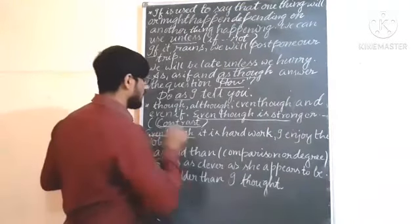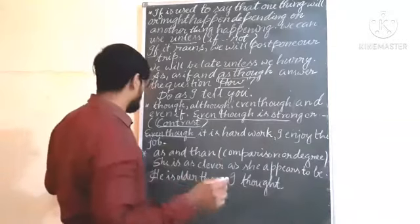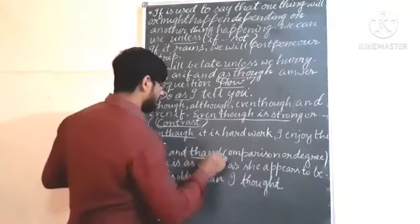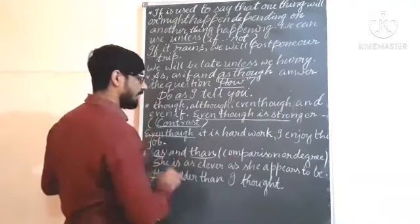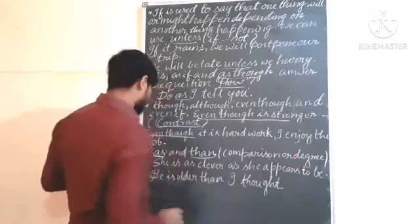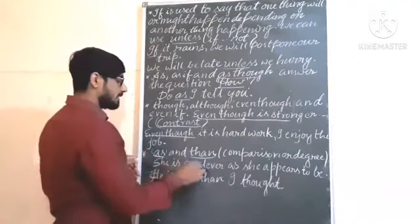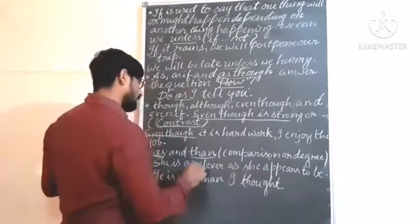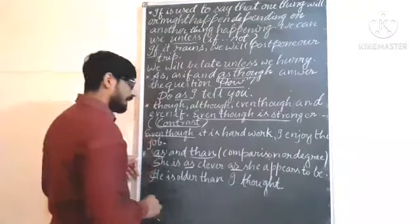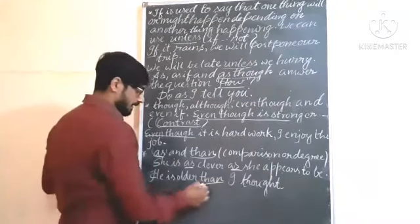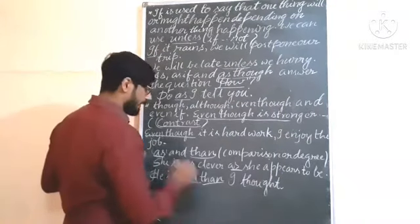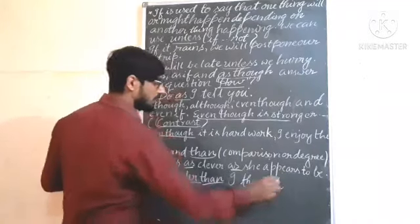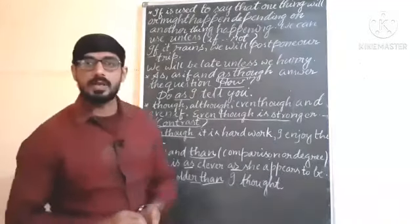Now 'as' and 'than' — we use 'as' and 'than' for comparison or degree. In positive degree, we use 'as...as'. For example: 'C is as clever as C appears to be.' In comparative degree, we use 'than'. For example: 'He is older than I thought.' I hope that you have understood all this clearly.